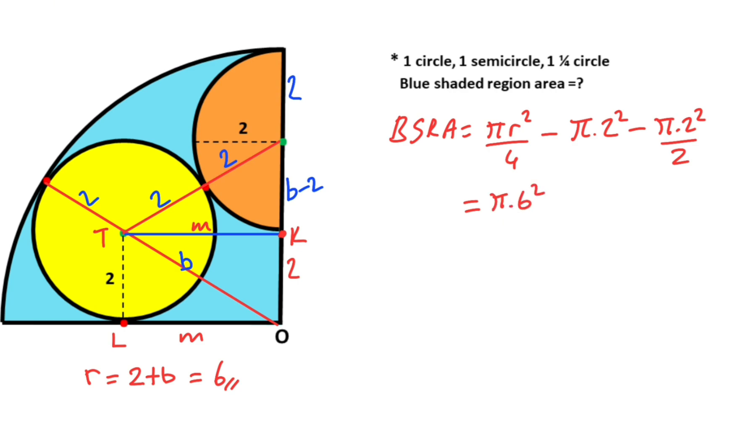Equal, so radius of the quarter circle equals 6. π × 6 squared over 4 minus 4π minus 2π equals 9π minus 6π.